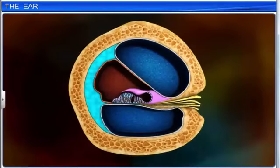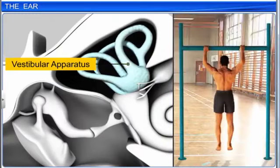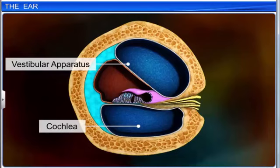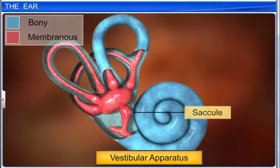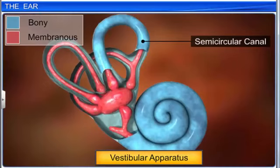The inner ear also contains a complex system called the vestibular apparatus, that helps maintain the body's balance. It is located above the cochlea and consists of three semicircular canals and the otolith organ. Each semicircular canal is C-shaped, lies at right angles to the other two, and is suspended in the perilymph.